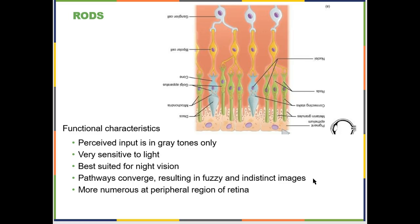These three rods all communicate to the same ganglion cell, which is the output to the brain — that's what the brain hears from. So if light hits here, here, or there, the brain thinks it's all the same thing. You don't get high-resolution information from your rods because they communicate as a group to the ganglion cells, and it's the ganglion cell that is the output to your central nervous system.